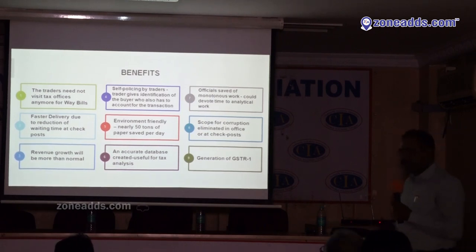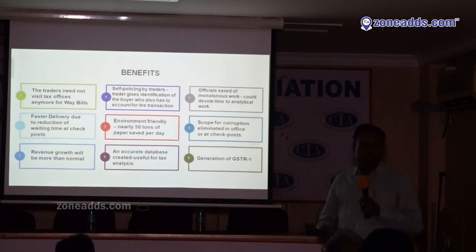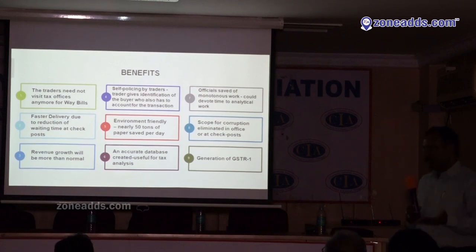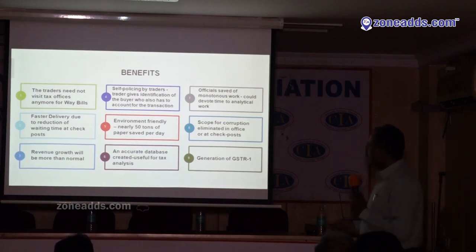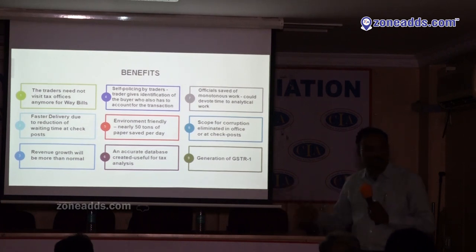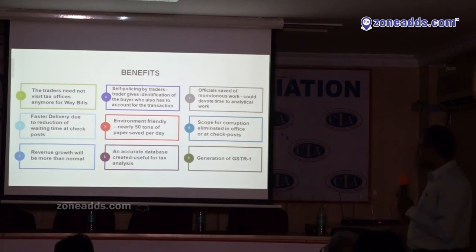The E-way bill system is environment friendly. One estimate says earlier we used almost 50 tons of paper every day in the old way bill system — now we need not take a printout; giving the number is enough. Database is accurate — if I supply 100 items, the system takes 100 and the recipient cannot enter 50 or 150. Officials are also saved from monotonous work of collecting thousands of way bills and comparing with issue registers. Everything is available online and easy to analyze. Scope for corruption is also reduced.